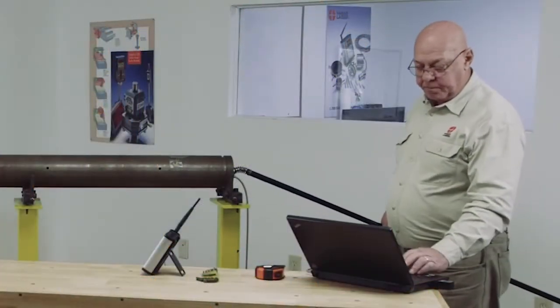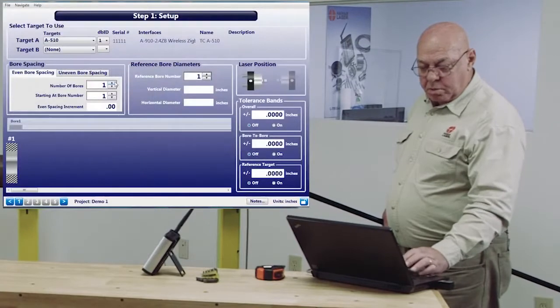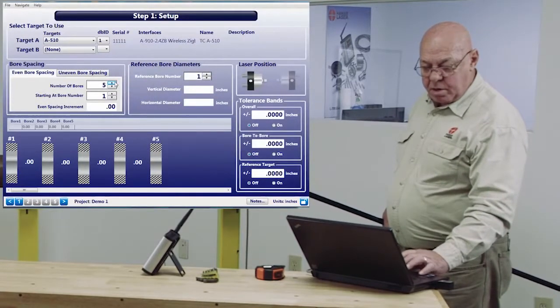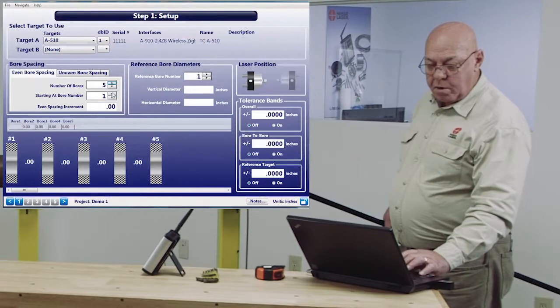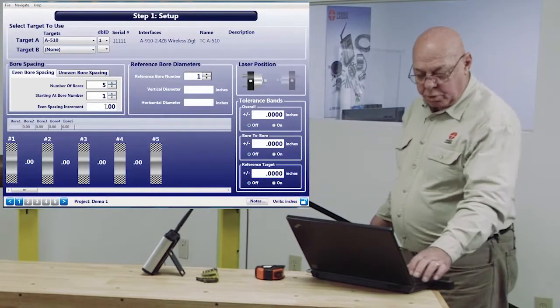I'm going to measure five points, so I'll set this up for five, starting at bore number one, and I'm going to do this every 12 inches.